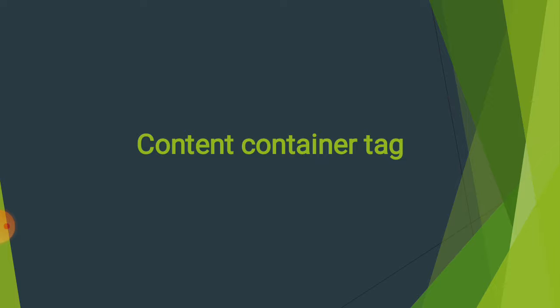Content-Container Tag एक ऐसा Tag होता है जिसमें हम एक Open Tag लेते हैं, बीच में Element लिखते हैं, और End Tag लगाते हैं with forward slash. इसमें Tag लगाने के बाद जो Element mention करते हैं, उसके बाद कुछ Content लिखते हैं — जैसे Image, Text, Table, Graph, Animation — इन दोनों Tags के बीच में हम अपने web page का content लिखते हैं, इसलिए इसे Content-Container Tag कहते हैं।